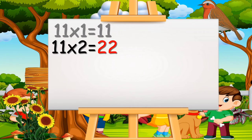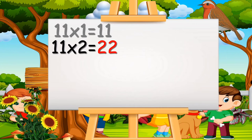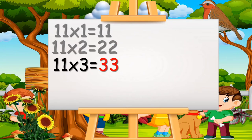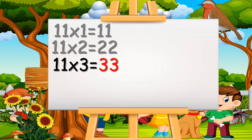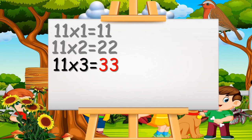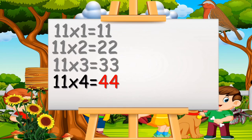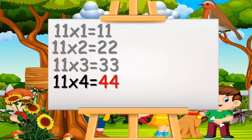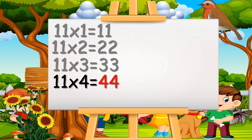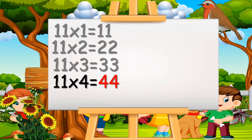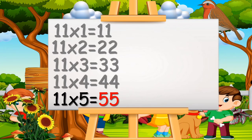Eleven twos are twenty-two. Eleven threes are thirty-three. Eleven fours are forty-four. Eleven fives are fifty-five.